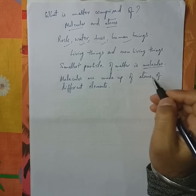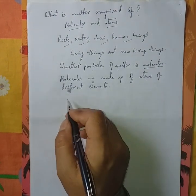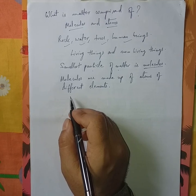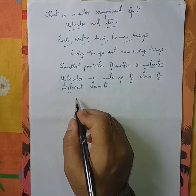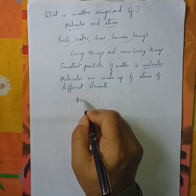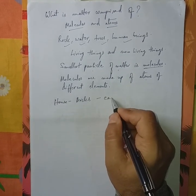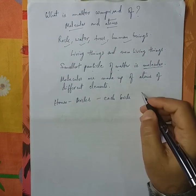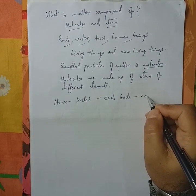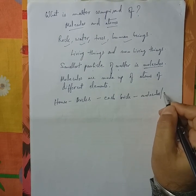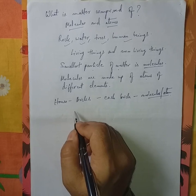I hope you have understood that molecules are the smallest particles of matter and molecules are made up of atoms. So we can say that atoms are the building blocks of matter. Like example, you have house and house is made up of bricks. Each brick, each brick you can consider as molecule or atom.